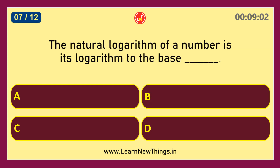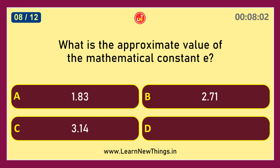The natural logarithm of a number is its logarithm to the base E. What is the approximate value of the mathematical constant E? 2.71.